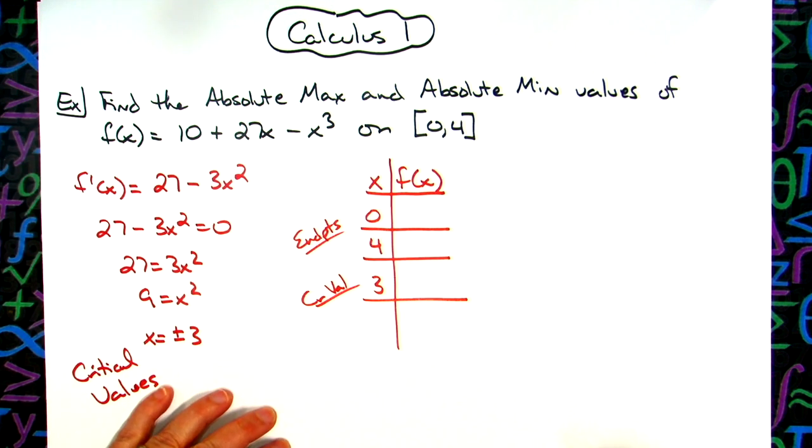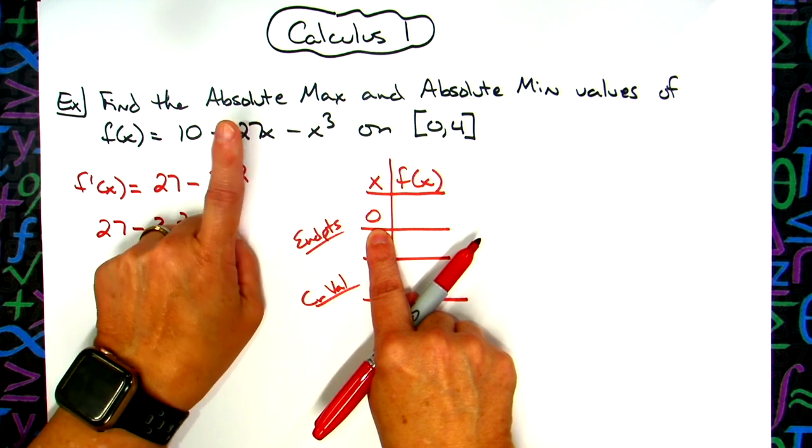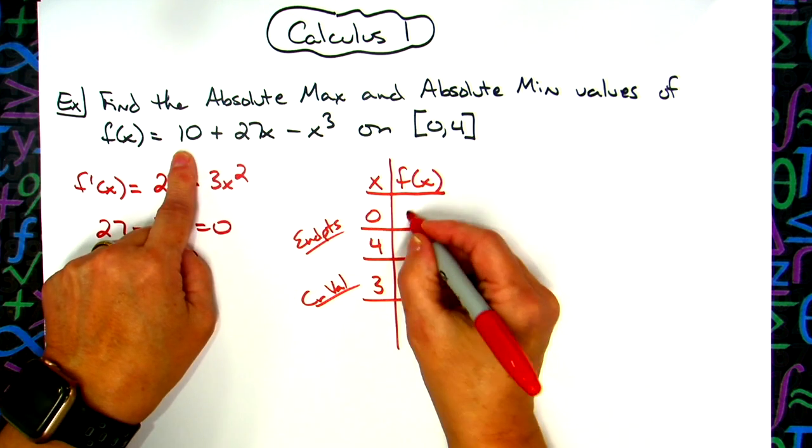So take them, plug them into the original function and see what we get. So if I take a 0 and I plug it in here, I plug a 0 in here, a 0 in here, then I'm just going to end up with a 10.